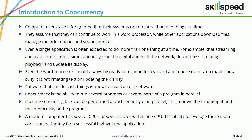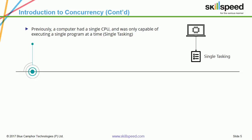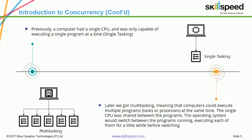A modern computer has several CPUs or several cores within one CPU. The ability to leverage these multi-cores can be the key for a successful high-volume application. Previously, a computer used to have a single CPU and was only capable of executing a single program at a time — single tasking. Later we got multi-tasking, meaning computers could execute multiple programs, tasks, or processes at the same time. The single CPU was shared between the programs; the OS would switch between them, executing each for a little while before switching.